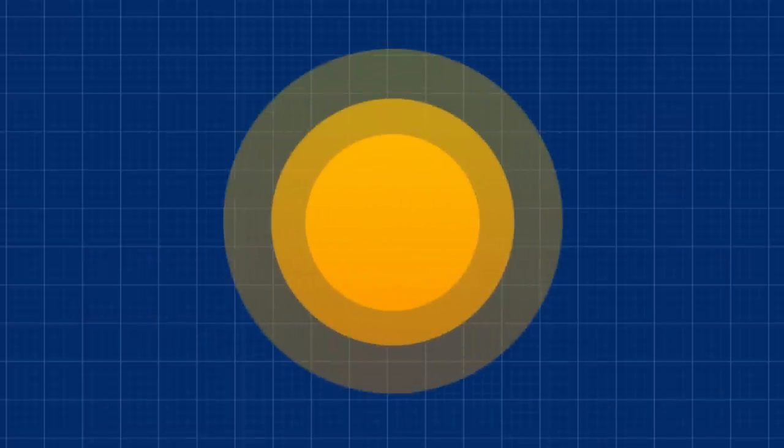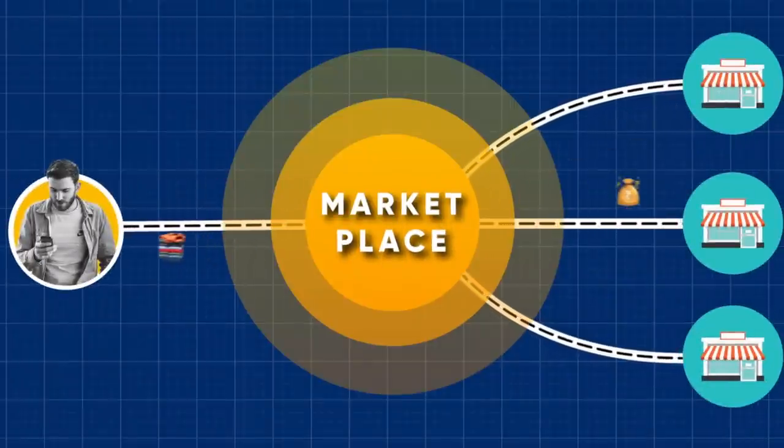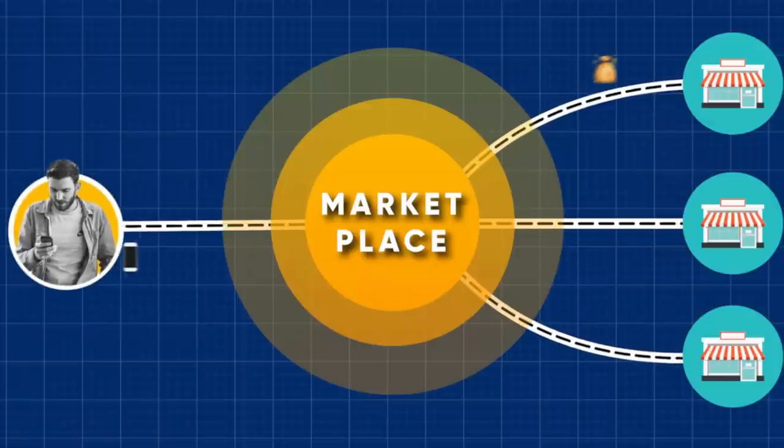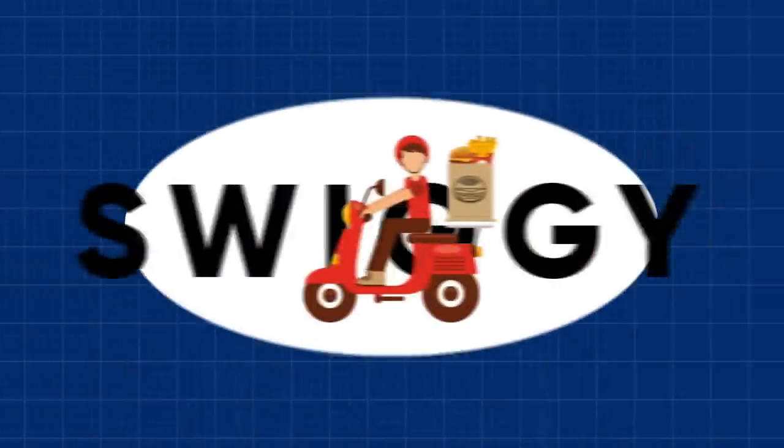These companies are using something called the marketplace model, where they simply act as a place where people can shop, transact, a market. You've got sellers and you've got buyers, and the place where they go to convene, where they go to discover each other, that's Uber, that's Airbnb, that's Swiggy.